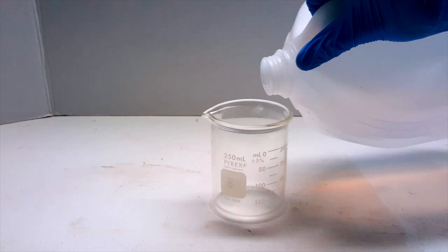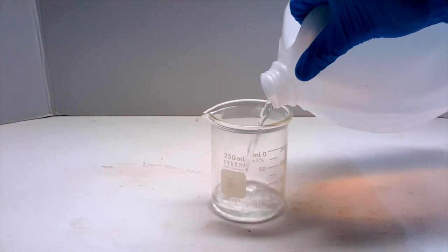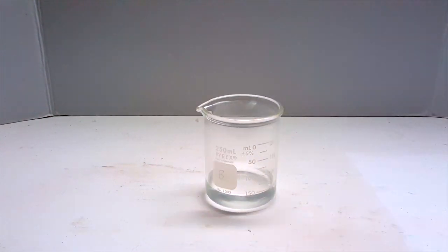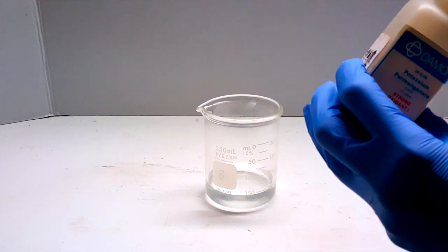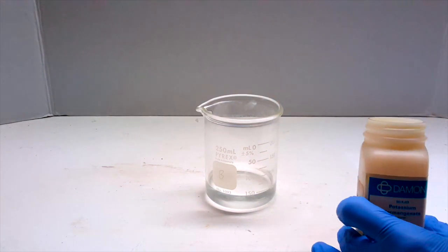Next, I take out a new beaker labeled B and add about 50 ml of distilled water. To this, I add a couple of milligrams of potassium permanganate and mixed it in.